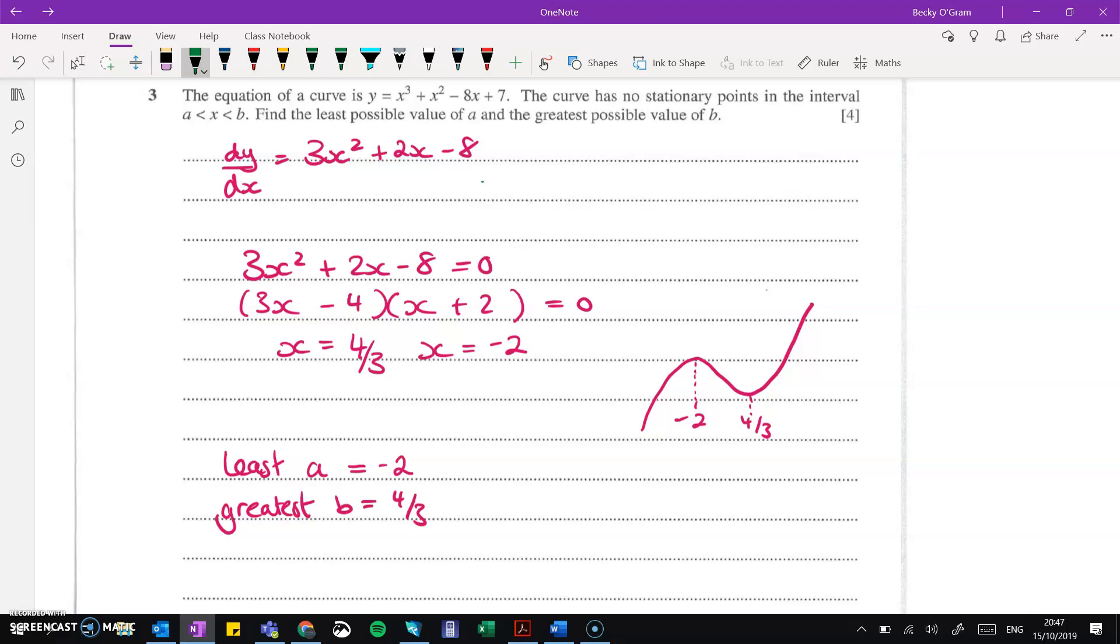Factorize and we get these two values. Now try and picture what's happening and then you'll understand the question a bit more. So we've got this curve. It's a positive cubic. So it follows this kind of shape. And one of the stationary points happens at -2 and the other happens at 4/3. So that means if we're told there were no stationary points in this interval of a to b, it'll have to be between the two stationary points. We have nothing in between those two values. So the smallest that we can go on the a side would be -2. We can't go any further left than -2. And we can't go any further right than 4/3 because we would hit those stationary points on the curve.